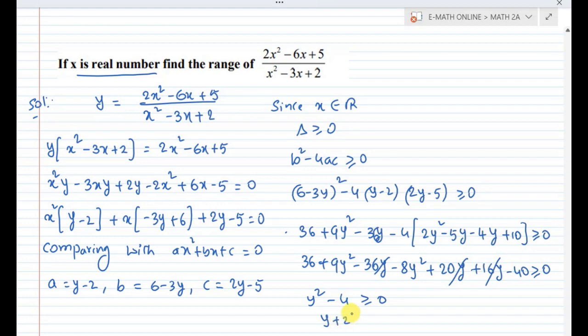After simplification, we get y square greater than or equal to... Working through the inequality: y must be greater than or equal to plus 2 or y must be less than or equal to minus 2. So y belongs to minus infinity to minus 2 union a closed interval from 2 to plus infinity. This is the range.